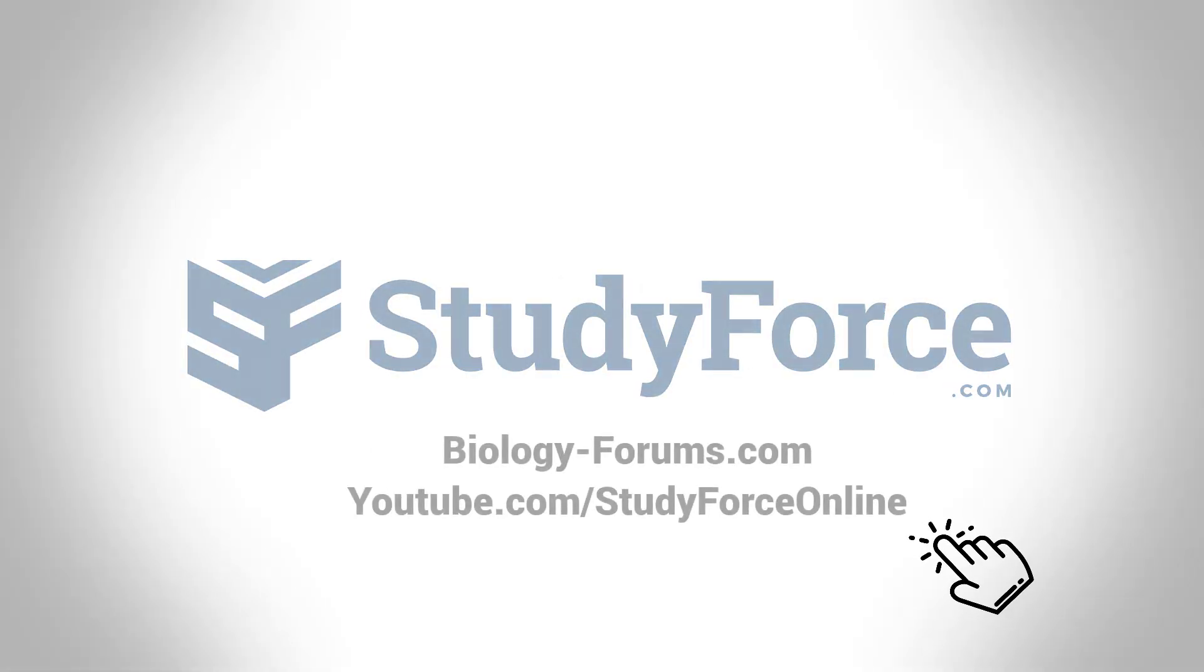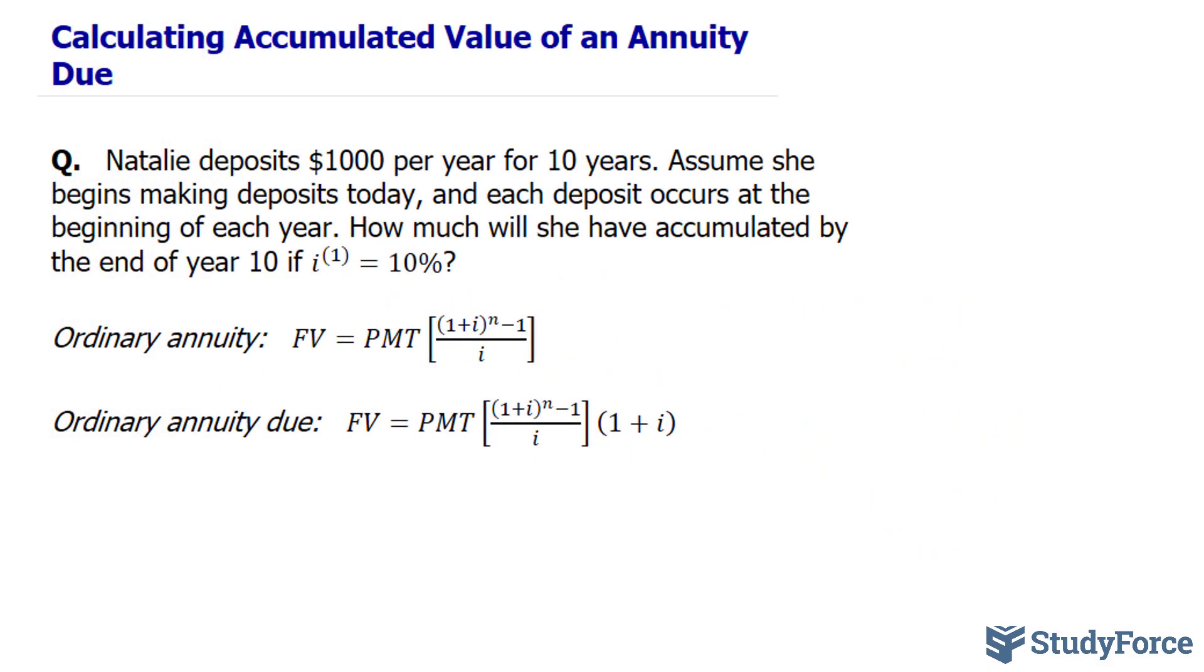In this lesson, I'll show you how to calculate accumulated value of an annuity due. Before we start answering the question that's prepared, remember that in our previous video we learned that an annuity due is a stream of periodic payments where each installment is made at the beginning of each period as opposed to at the end of each period.